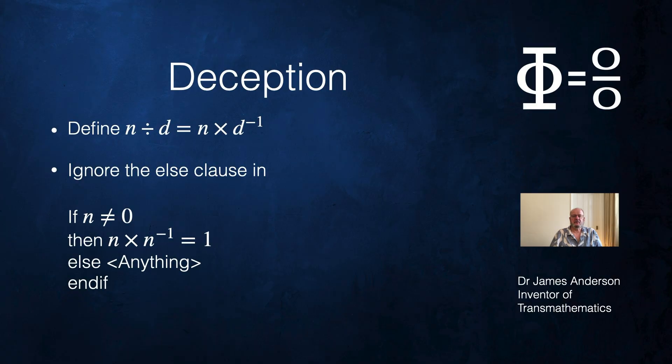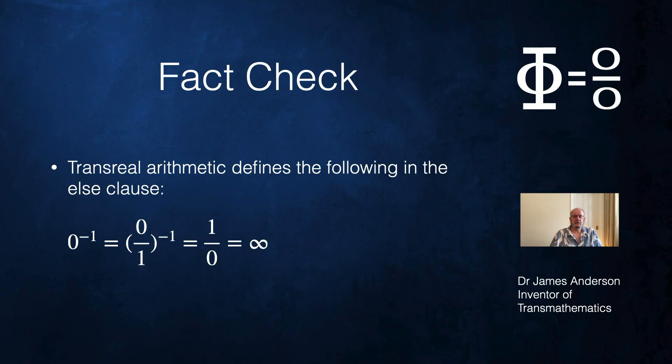But the trick is turned by getting you to ignore the fact that otherwise, in the else case, anything at all can happen. You can choose what happens when n equals zero. You were told if n is not equal to zero then n times n to the power of minus one equals one. But what if n is equal to zero? You can choose. Transreal arithmetic chooses zero to the power minus one equals zero over one to the power minus one equals one over zero equals infinity. It's that easy to define division by zero.